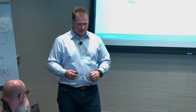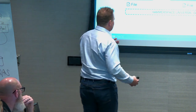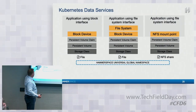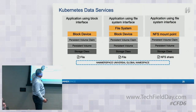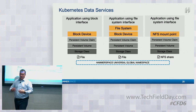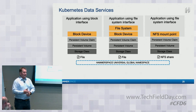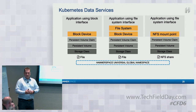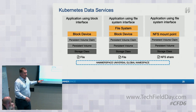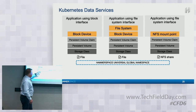We did a CSI plugin for all this. These are the three ways to consume storage in Kubernetes with Hammerspace: one is the block device, and the others represent either files or NFS shares within the Hammerspace infrastructure itself. All the features we've spoken about today — the metadata, the live data mobility, the global namespace, snapshots, clones — everything applies to this environment.